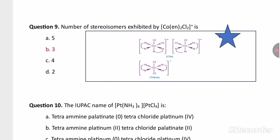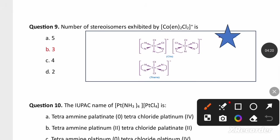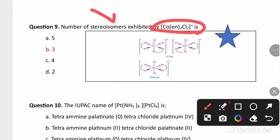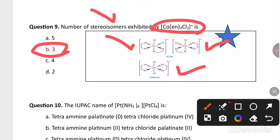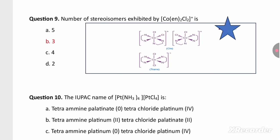Another question from the coordination compounds chapter: the number of stereoisomers exhibited by this coordination complex. This complex can exhibit 2 cis isomers and 1 trans isomer, so it will exhibit 3 stereoisomers in total.